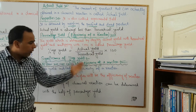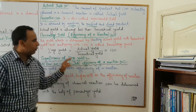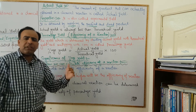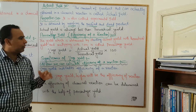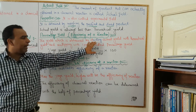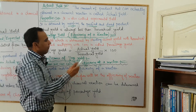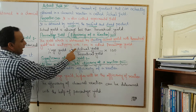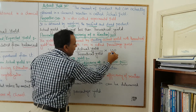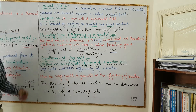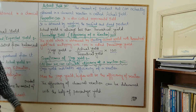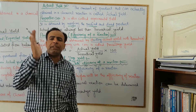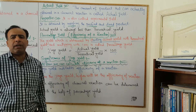Now, what is percentage yield? Percentage yield is also called the efficiency of a reaction. It is the yield obtained by dividing actual yield by theoretical yield and multiplying by 100. So the formula is: Percentage Yield = (Actual Yield / Theoretical Yield) × 100.